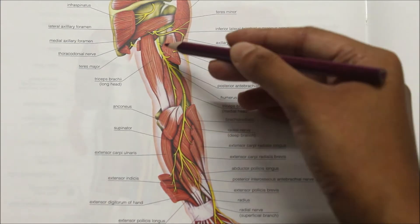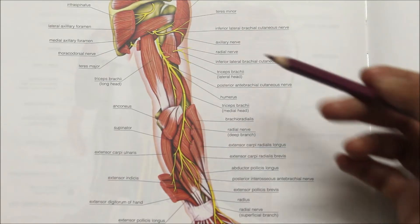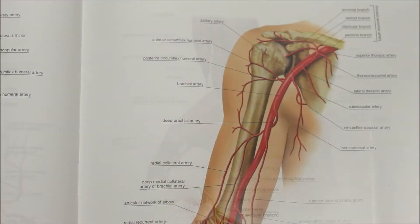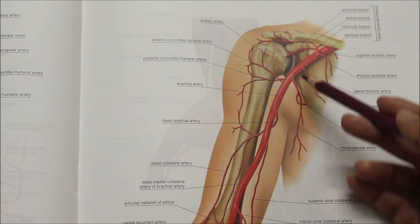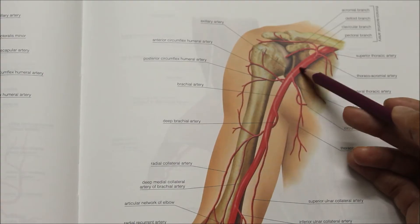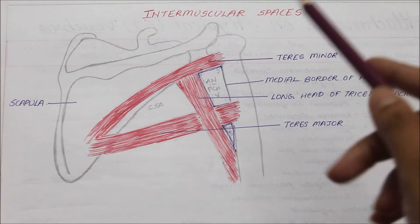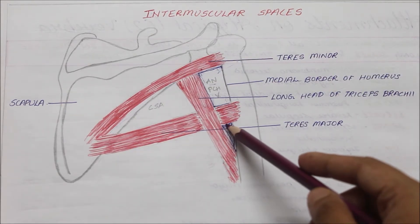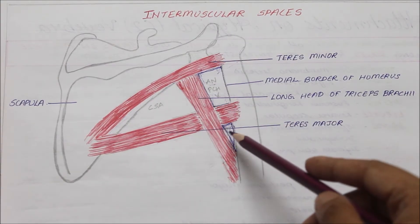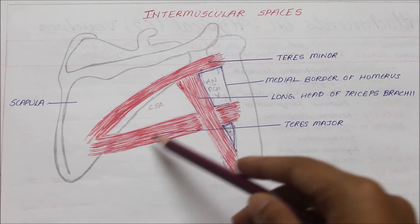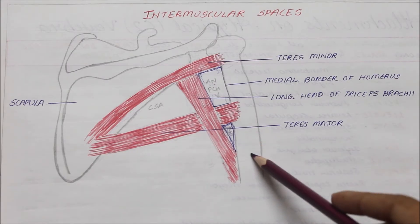Before we learn about the course of the radial nerve, let me explain certain terms. This is the anterior view of the right upper limb showing the arterial system. This right here is the axillary artery, while this is called the brachial artery. This is a diagram of the intermuscular spaces. This is the lower triangular space that lies diagonally opposite to the upper triangular space. It is bounded above by the teres major muscle, medially by the triceps muscle, and laterally by the humerus bone.